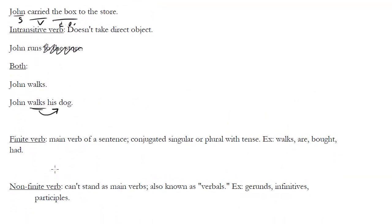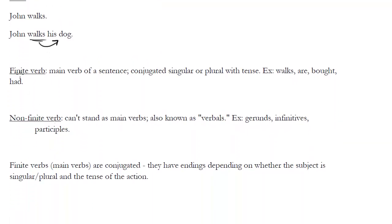Within verbs in general, there are two major classes. We've already looked at finite verbs, so finite verbs are basically the main verb of a sentence. They're conjugated, singular, or plural, depending on what the subject is, and they've got tense. So some examples, we've already seen them, walks, are, bought, had, right? All finite verbs, and they're finite because they're complete.